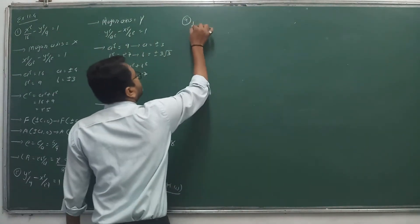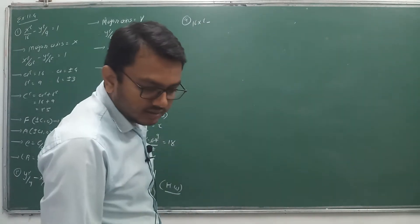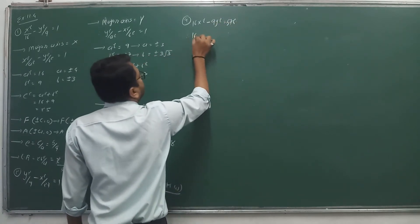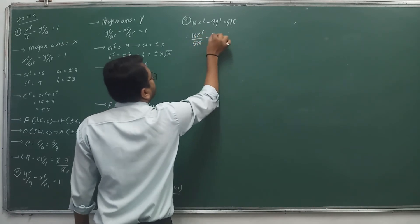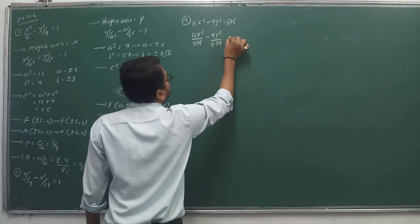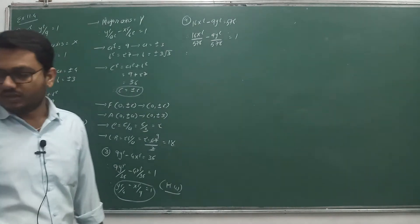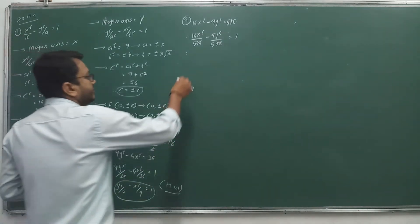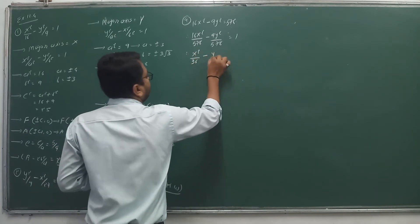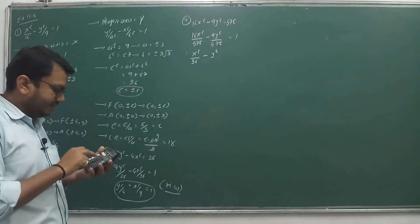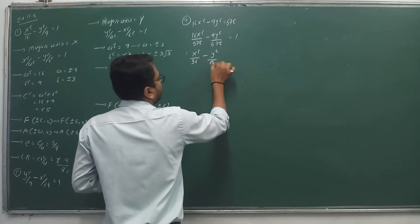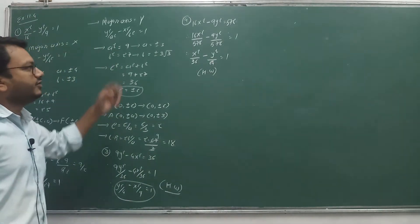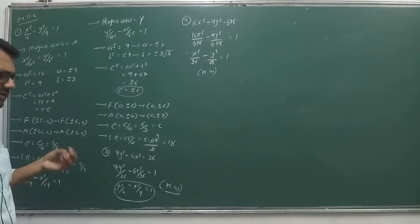Number 4: 16x² minus 9y² = 576. Divide all terms by 576: 16x²/576 minus 9y²/576 = 1, giving x²/36 minus y²/64 = 1. This is x²/a² minus y²/b² form, so major axis is X. Simple calculation from here.